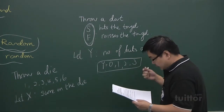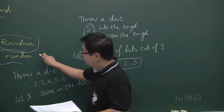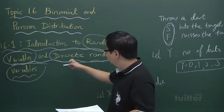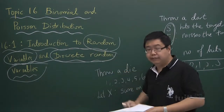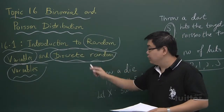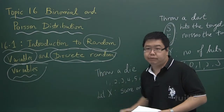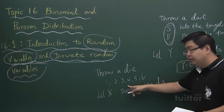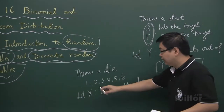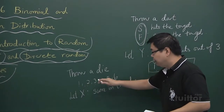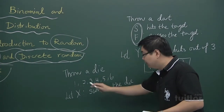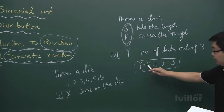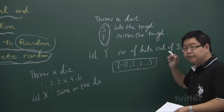Now let's look at another definition. There is this thing called a discrete random variable. What is actually a discrete random variable? It's a random variable, and the word 'discrete' tells you it takes values point-wise. So the die example is a discrete random variable because it takes values 1, 2, 3, 4, 5, and 6 — you can literally list down these values. Likewise, the dart example is also a discrete random variable with values 0, 1, 2, 3.